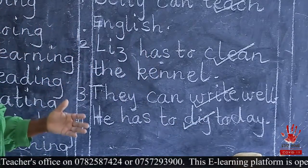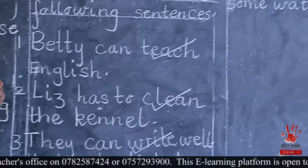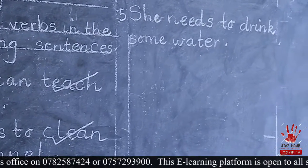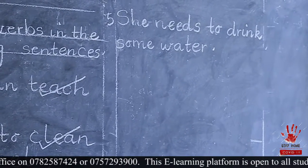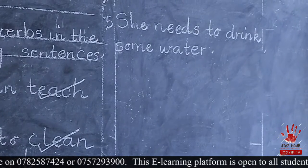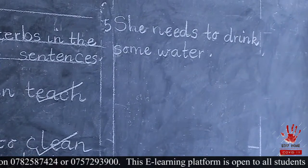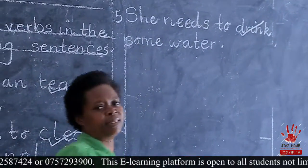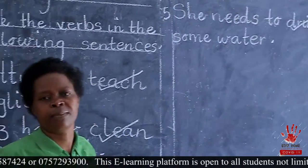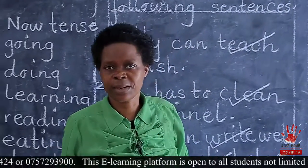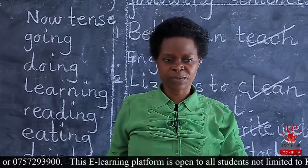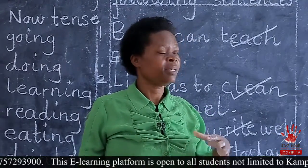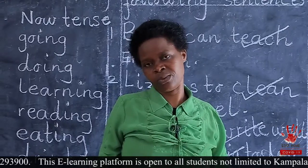You go to number five and also try it. She needs to drink some water. Which one is an action there in that sentence? So we have drink. Drink is an action, so it's a verb. That was our correction. So you can cross-check your work very well. Be honest and see. You can make corrections, my good learners.